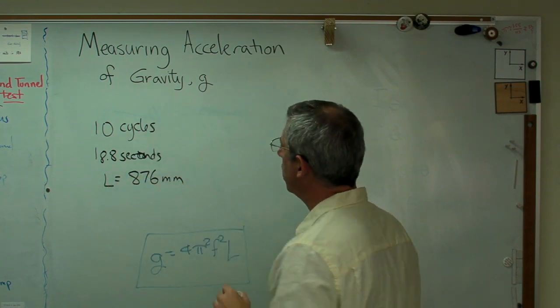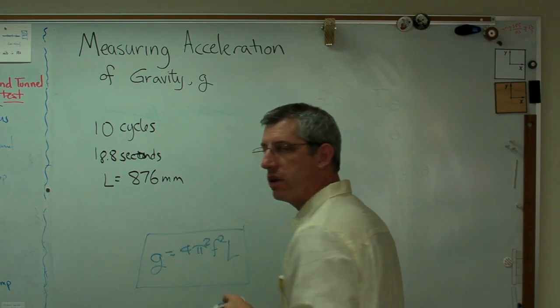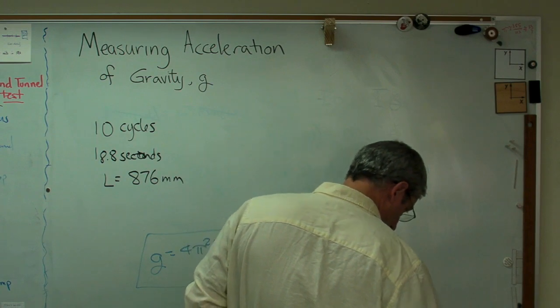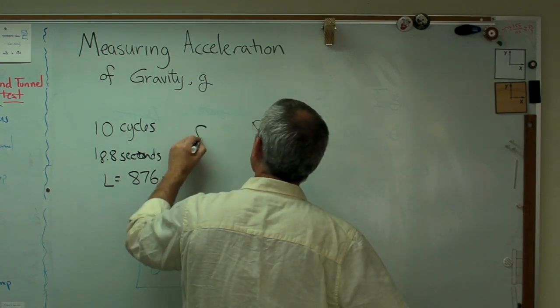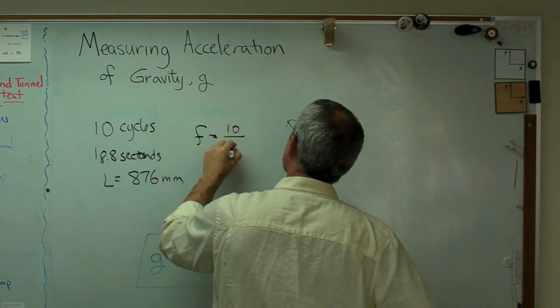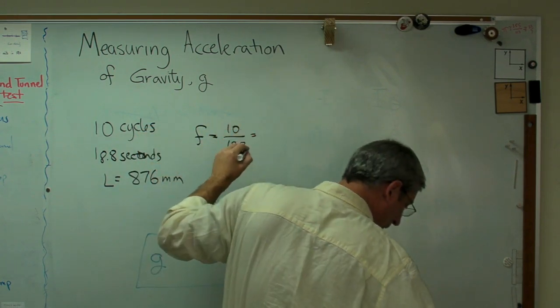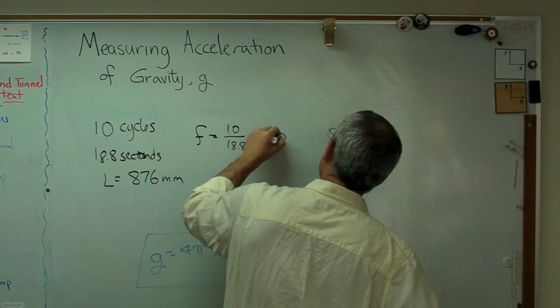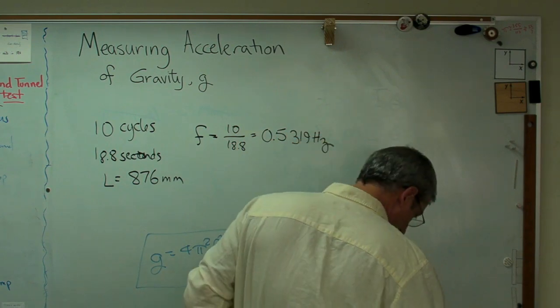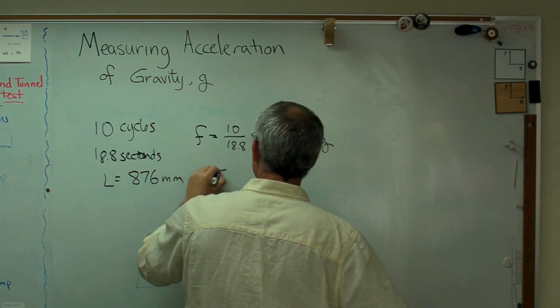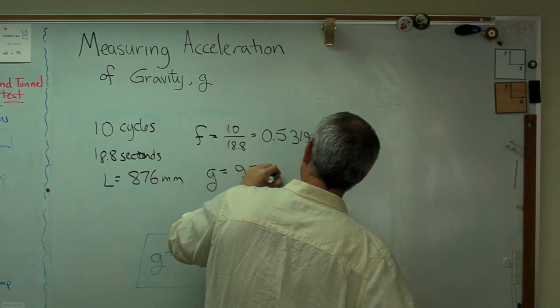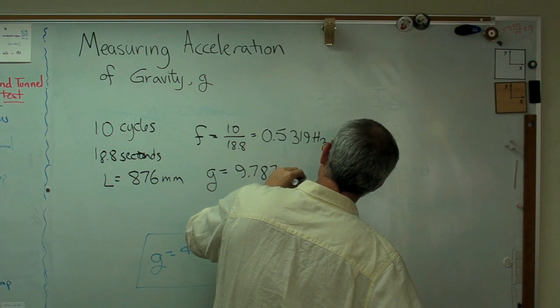If I have 10 cycles in 18 seconds, and I want to know how many seconds per cycle, all I've got to do is divide my frequency, which is in cycles per second. So 10 over 18.8, that's going to be about 0.5319 hertz. Plug that in, and I got an estimate of g of 9.787 meters per second squared.